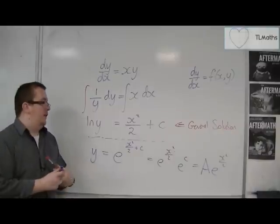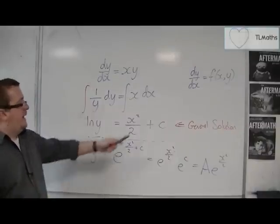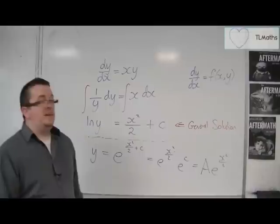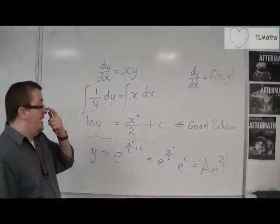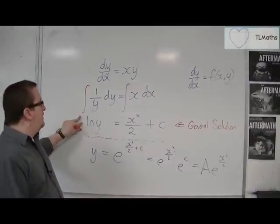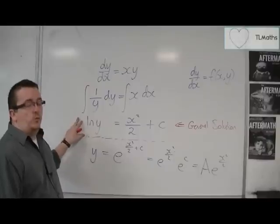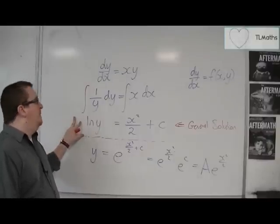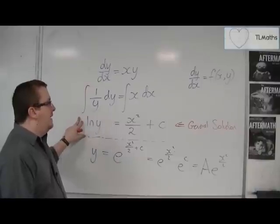So, y equals a e to the x squared over 2 is also the general solution. And is a nicer way of writing it. It's just remember that at this stage, if you can't get it to y equals, then don't worry. Just leave it as is and work with it from there.